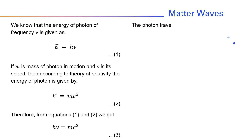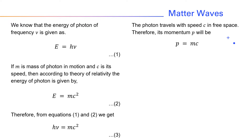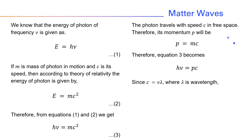The photon travels with speed c in free space. Therefore, its momentum p will be p = mc. Substituting into equation 3, hν = mc². Since c = νλ, where λ is wavelength, we get hν = pνλ. Therefore, h = pλ, or λ = h/p.